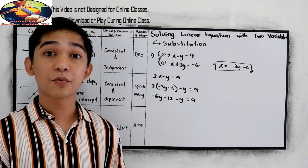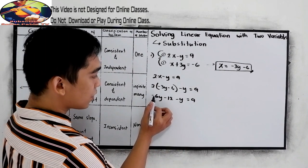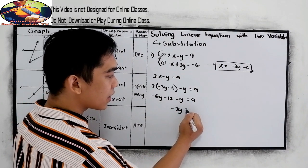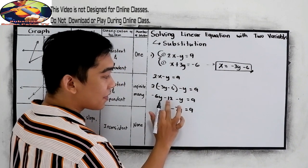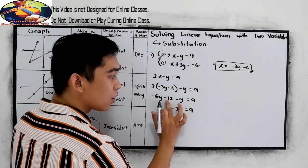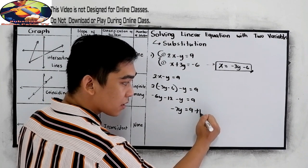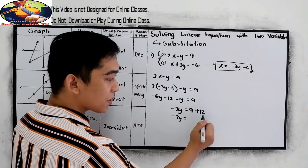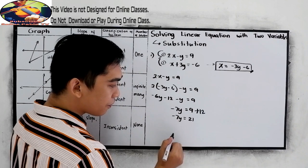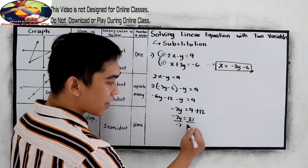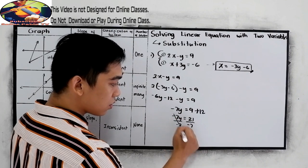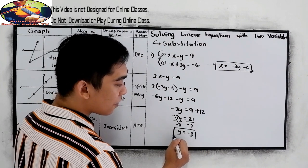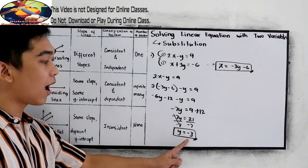Now we are going to find the value for y. So negative 6y minus y gives negative 7y, which is equal to 9. Using the addition property of equality, I will move negative 12 to the right side, so it becomes positive 12. So negative 7y is equal to 9 plus 12, which is 21. Now we divide both sides by negative 7, so y is equal to 21 divided by negative 7, which is negative 3. This will be the value for our y.